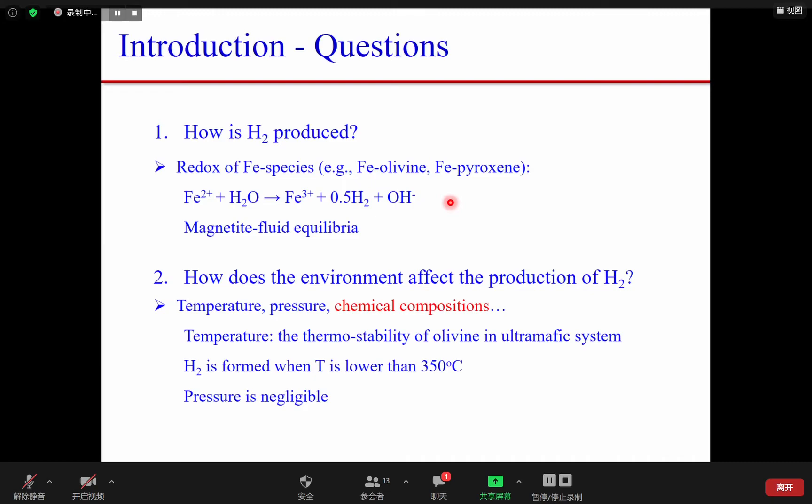Several studies prove that temperature can affect the thermal stability of ions. Once the temperature gets higher than 300 degrees C, the ions become very stable. The hydrogen is usually formed when the temperature is lower than 350 degrees C. Right now, pressure is negligible.